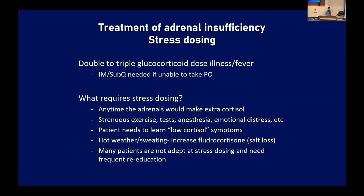Stress dosing is an important concept to review with all patients with adrenal insufficiency. When ill or febrile, doubling or tripling glucocorticoids is important. Most patients should have an IM or subcutaneous injection of steroids at home for use when they can't take anything by mouth. Stress dosing is also needed any time the adrenals would normally produce extra cortisol: strenuous exercise, finals in college, undergoing surgery or anesthesia, or severe emotional distress. Patients should also learn to recognize their own symptoms of low cortisol. In hot weather with excess sweating, the fludrocortisone dose may need to be increased to help with fluid retention and sodium loss. Patients constantly need reminders about stress dosing.